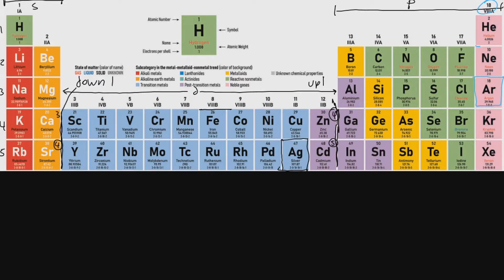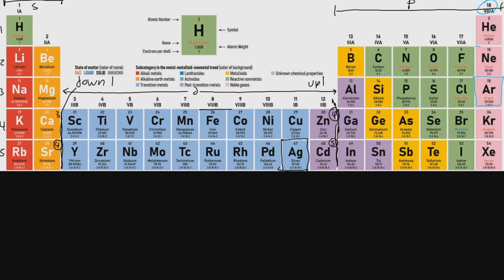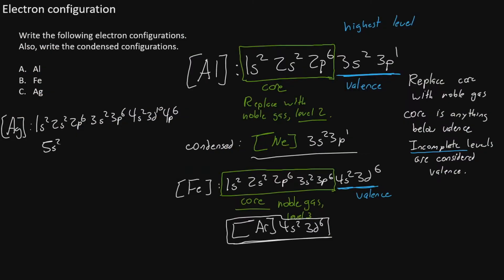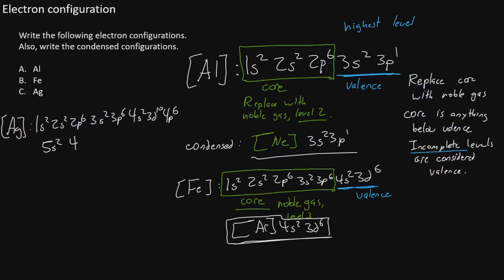Now we drop to level 5 and write 5S2. Then we jump down to level 4 in the D block and count 9 boxes to reach silver, giving us 4D9.